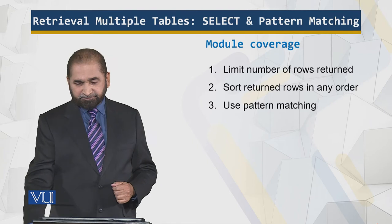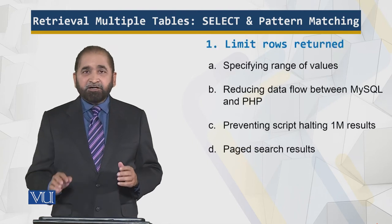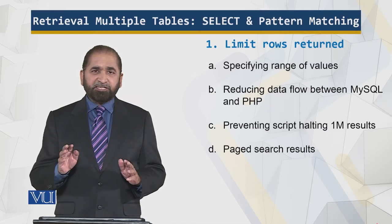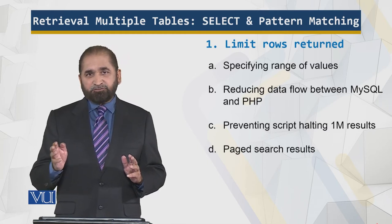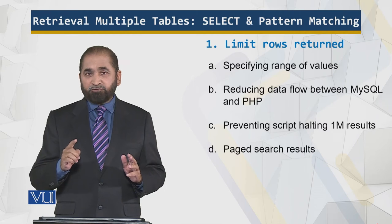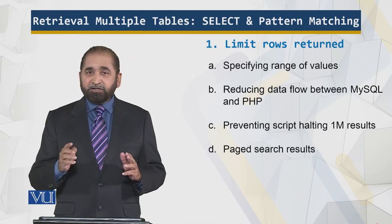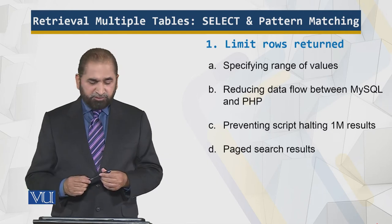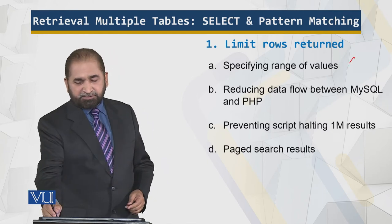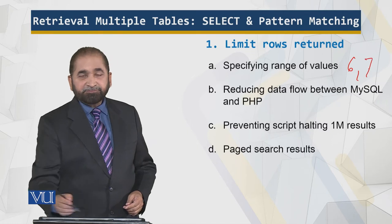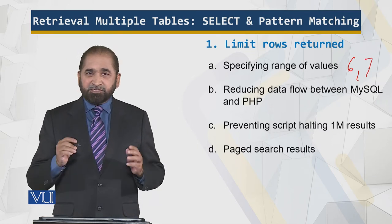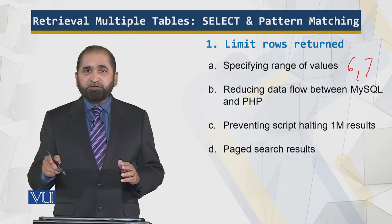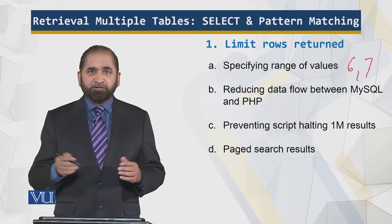LIMIT is the command that specifies the range of values returned. When you say LIMIT 5, it returns the first five rows starting from row one. You can also specify two numbers — for example, '6, 7' means start from the sixth row and count seven rows from there.